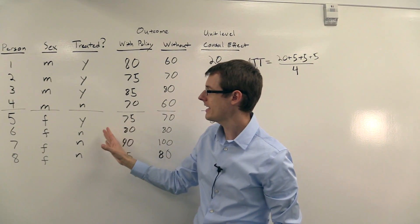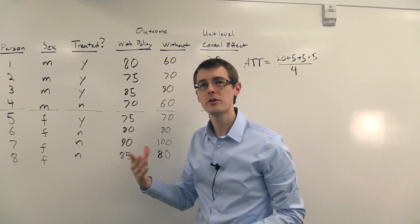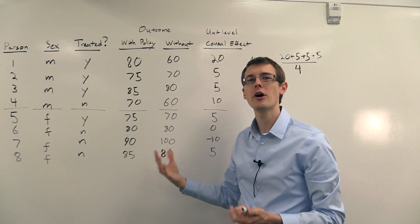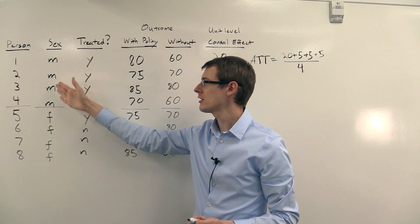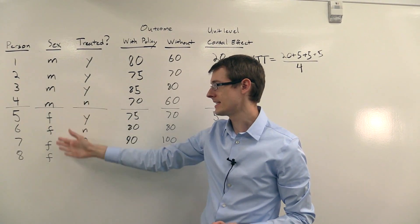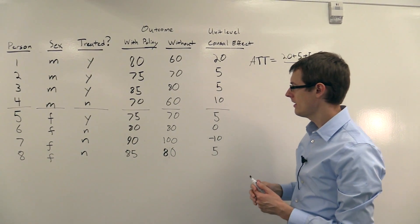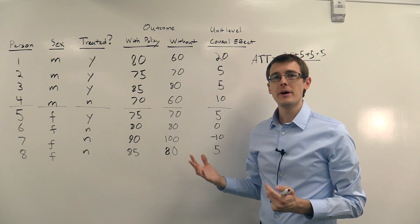It's the average of these three people and this person, where we're just thinking of this variable telling us whether someone was treated or not as just another variable in our dataset, just like sex is here, male or female. So that's average treatment on the treated.